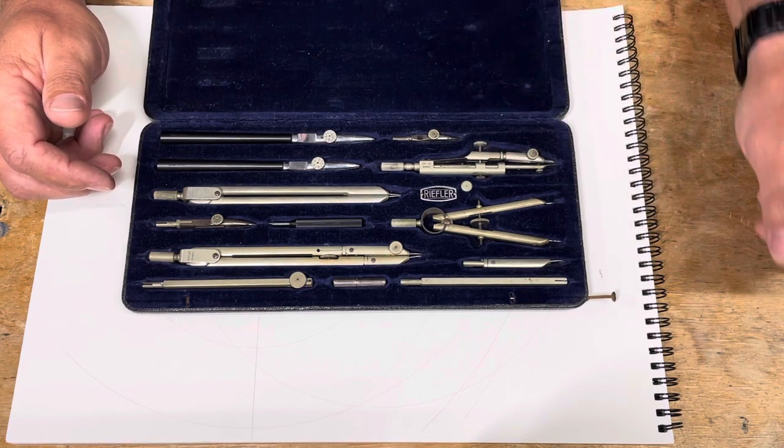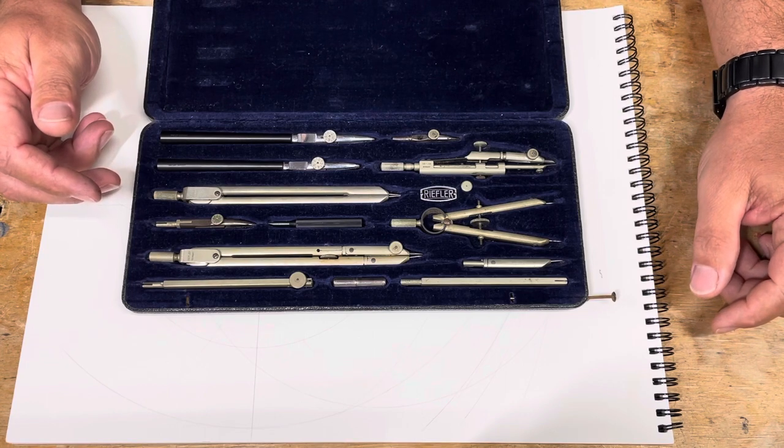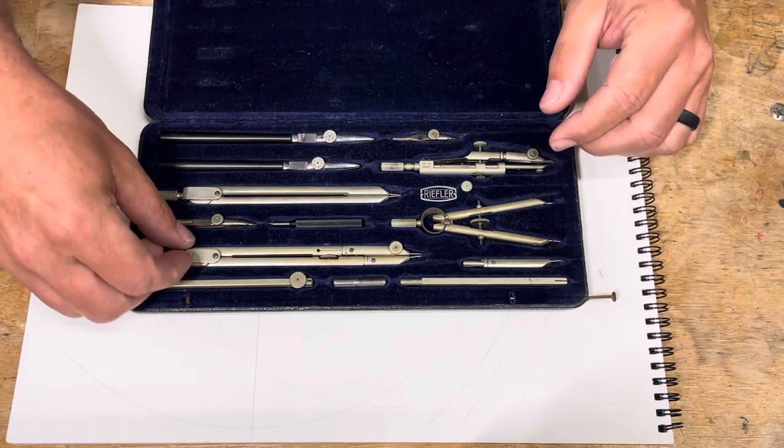This is a divider as well, it's just a small divider. And this cool little trinket here, this drop bow compass and various other things we'll go over. So let's look at the main compass first.